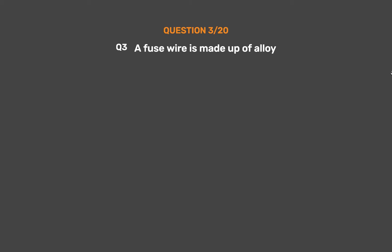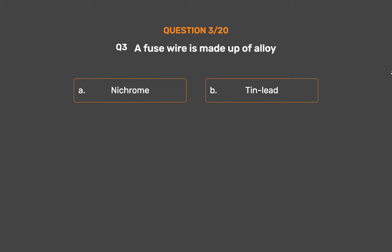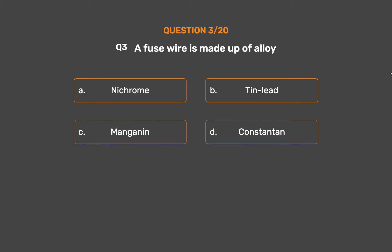Question number 3. A fuse wire is made up of alloy: Option A: Nichrome. Option B: Tin-lead. Option C: Manganin. Option D: Constantan.